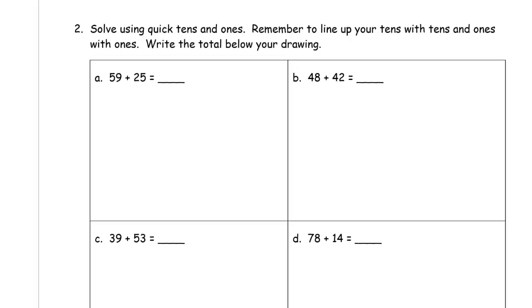59 plus 25. One, two, three, four, five tens, and one, two, three, four, five, six, seven, eight, nine ones. 25 is two tens and one, two, three, four, five ones.